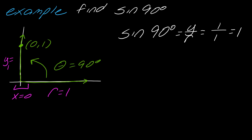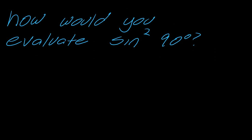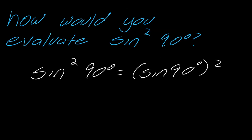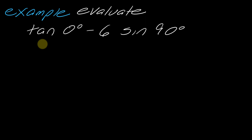One thing to mention: how would you evaluate sine squared of 90 degrees? If you have sine squared of 90 degrees, you take sine of 90 degrees and then square it. We just found sine of 90 degrees is 1, so you take 1 squared, which is just 1.